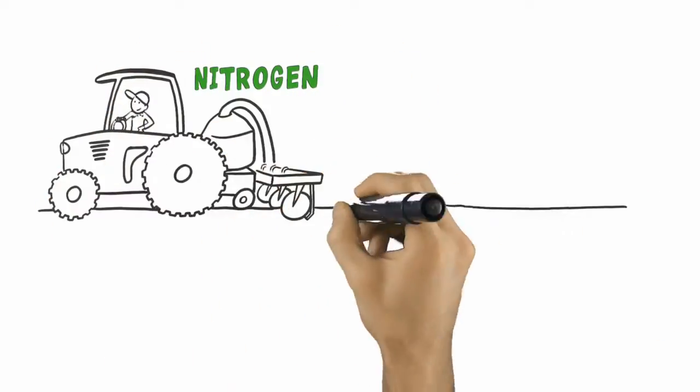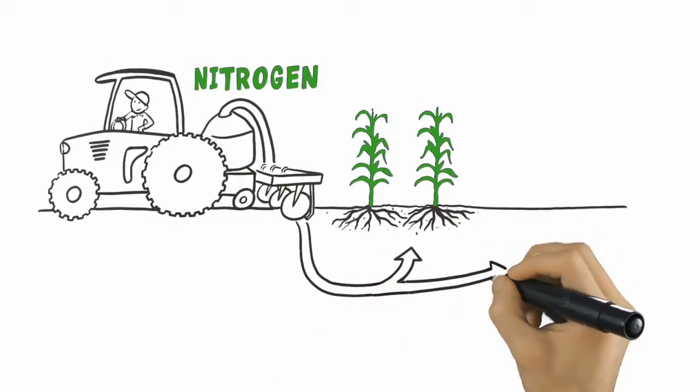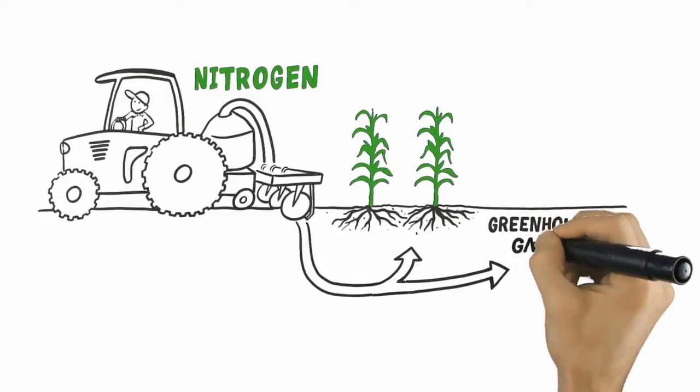Let's take nitrogen, the nutrient most commonly used in food production. This vital nutrient is required to produce healthy food and replenish soils. However, its application needs to be properly managed to prevent the production of greenhouse gases.